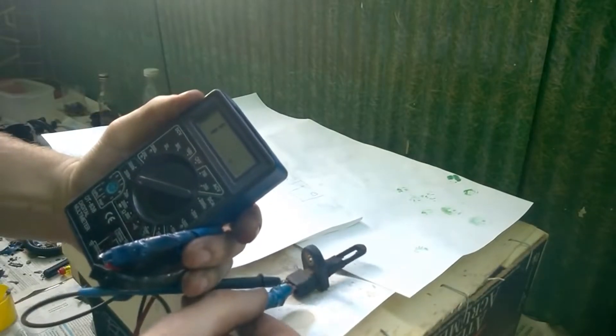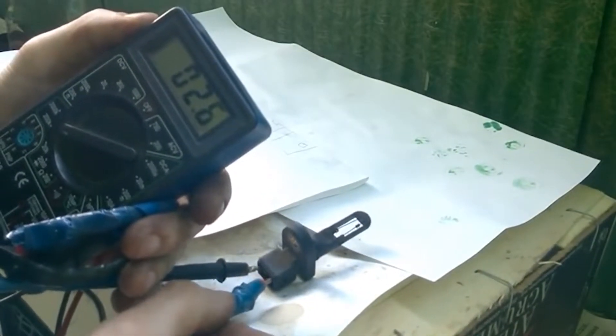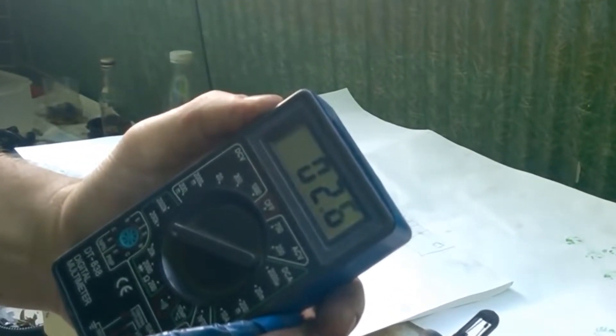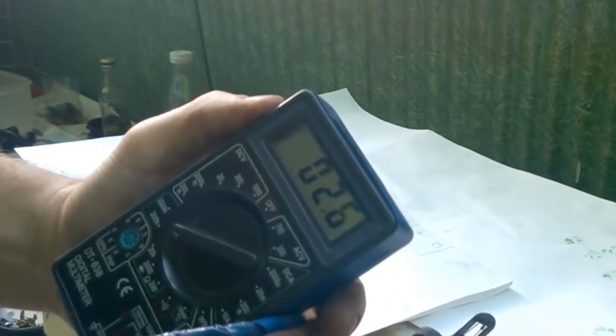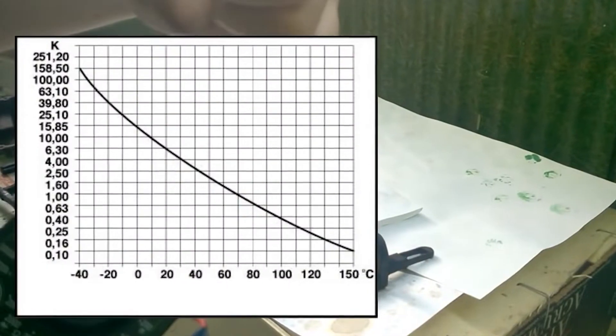Connect the measuring device to the sensor contacts and check the resistance value. In my case the sensor shows a resistance of about 2.6 kilo ohms which is close to the graph.